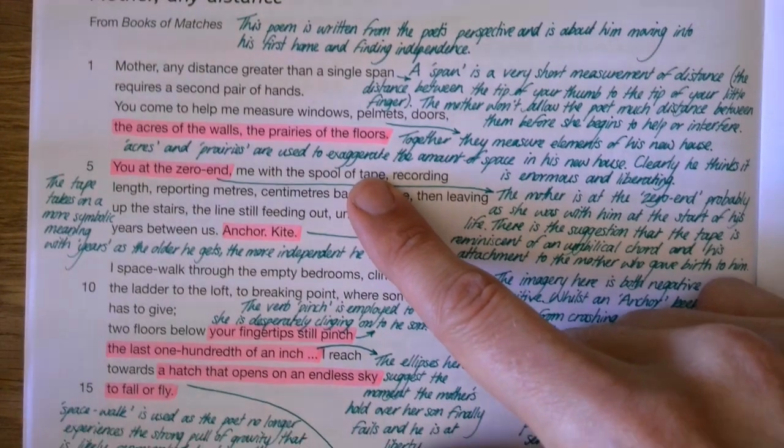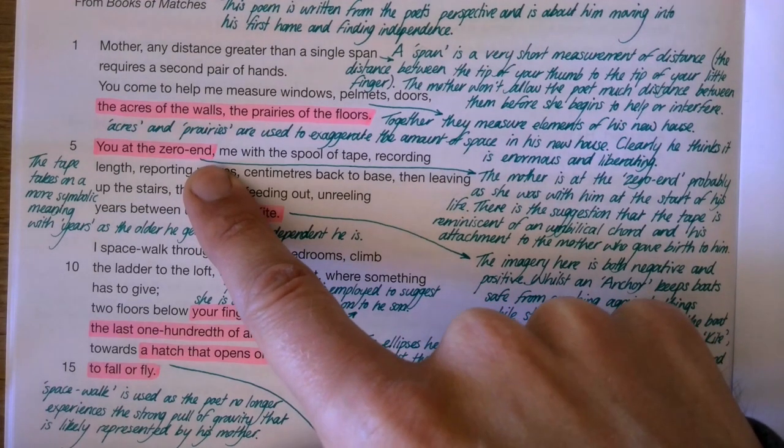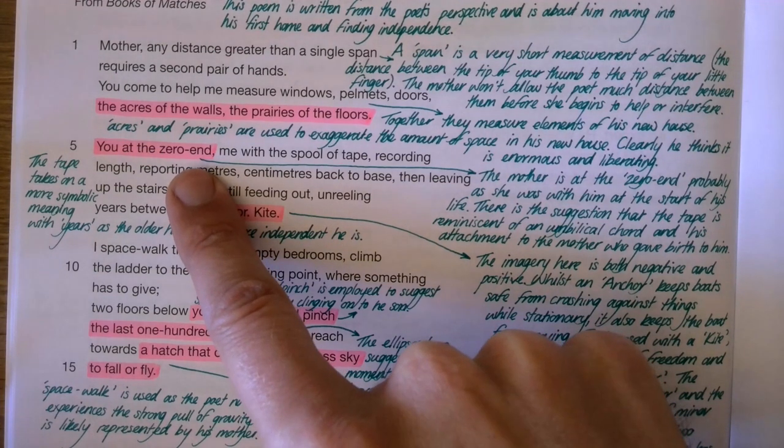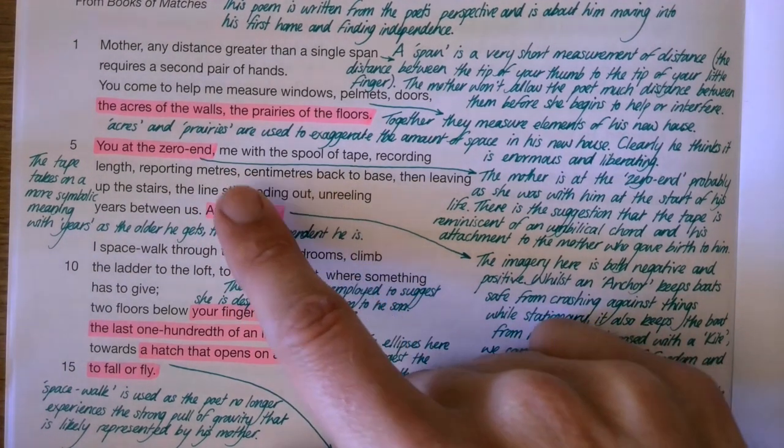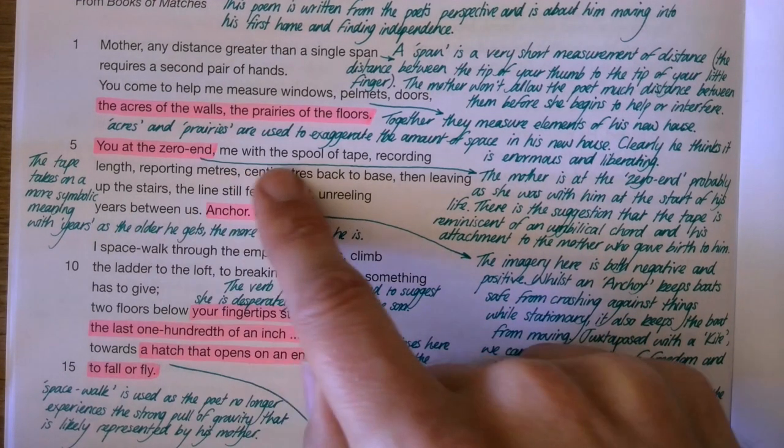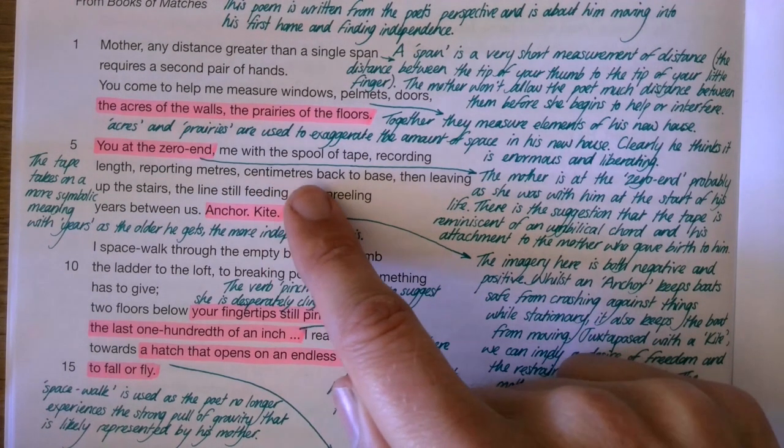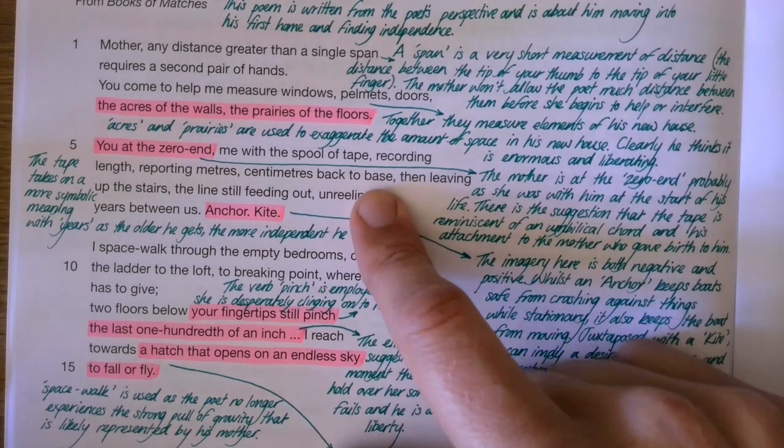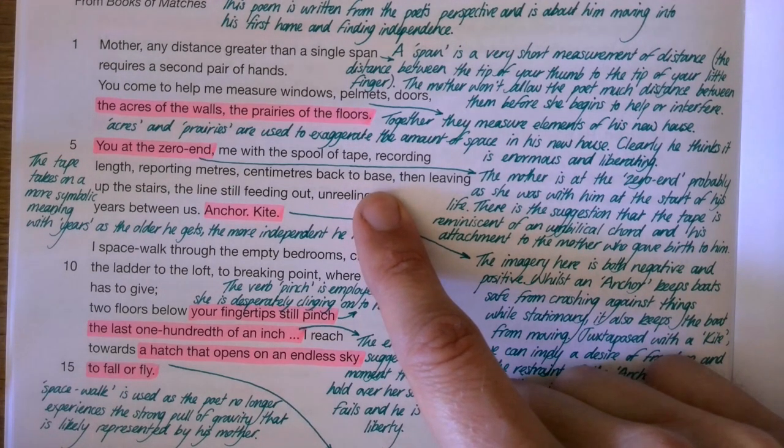Moving on, he talks about you at the zero end—the you is a reference to his mother. The zero end is really interesting because ever since she's been around, right from the start, from his birth, she's always been there. And he with the spool of tape recording length, reporting meters, centimeters back to base then leaving up the stairs. I've heard it suggested that the spool of tape resembles an umbilical cord and how he gets further away until eventually he basically gets detached from his mother. I like the idea of centimeters back to base. The idea of calling his mother base says that she's stable and that he can rely on her.